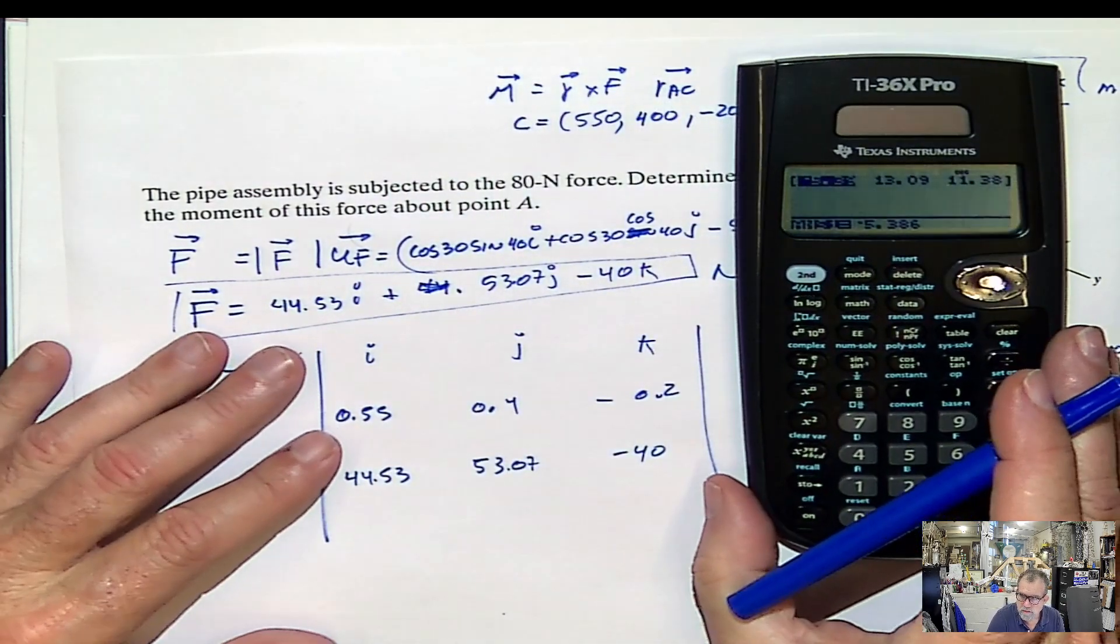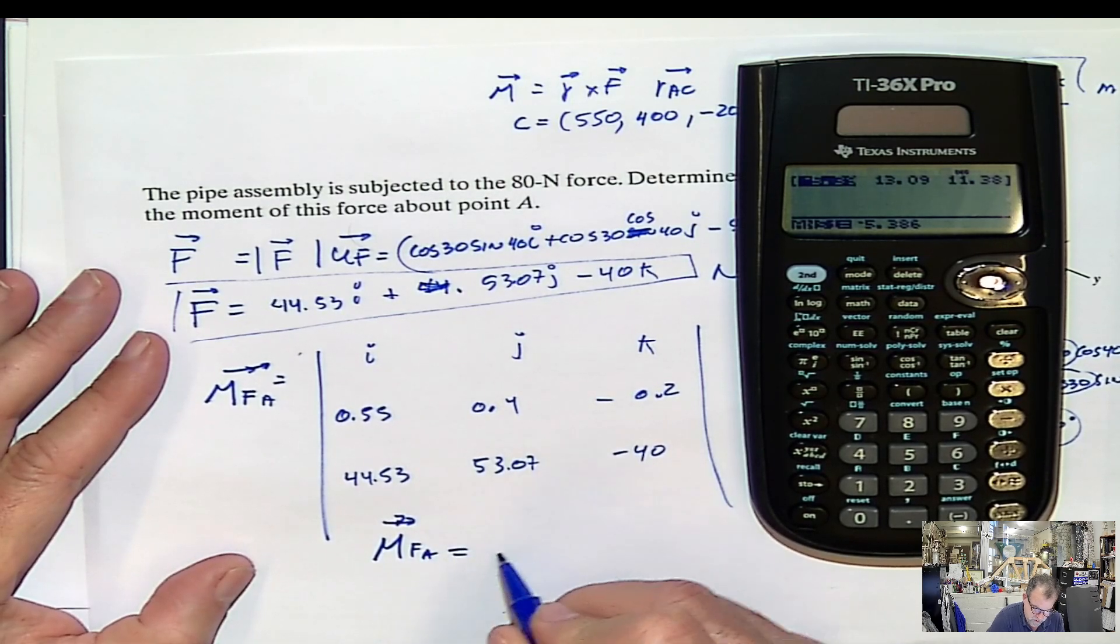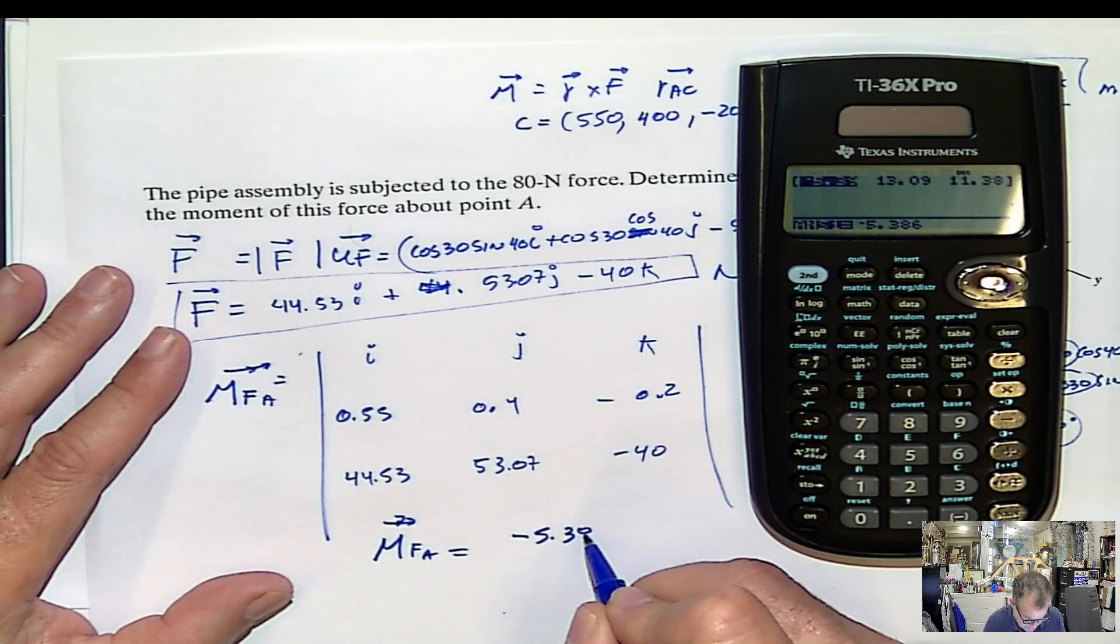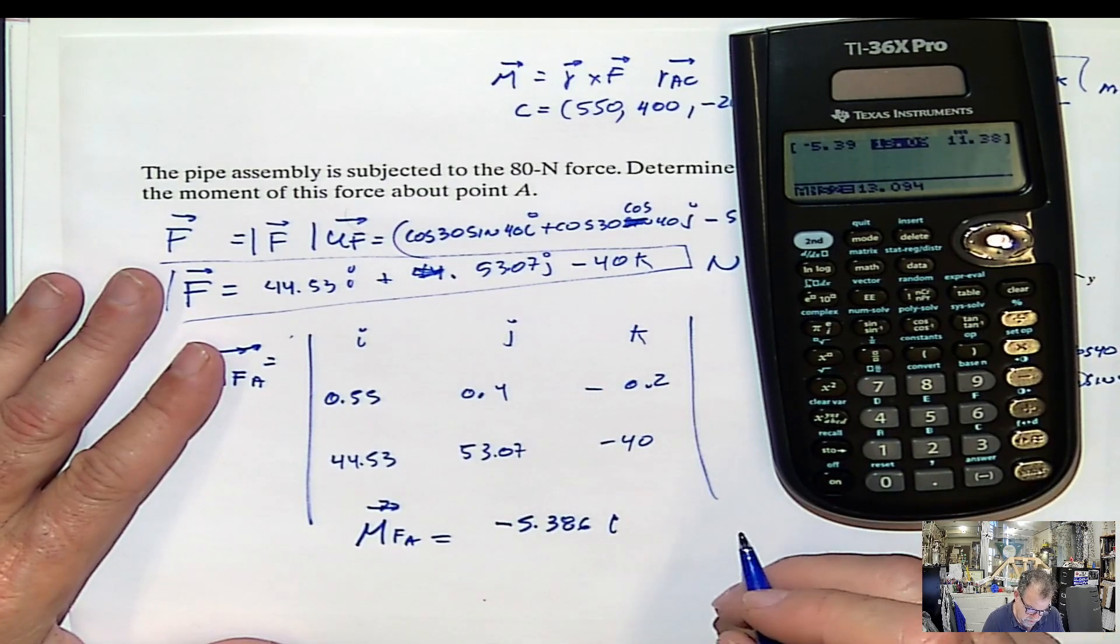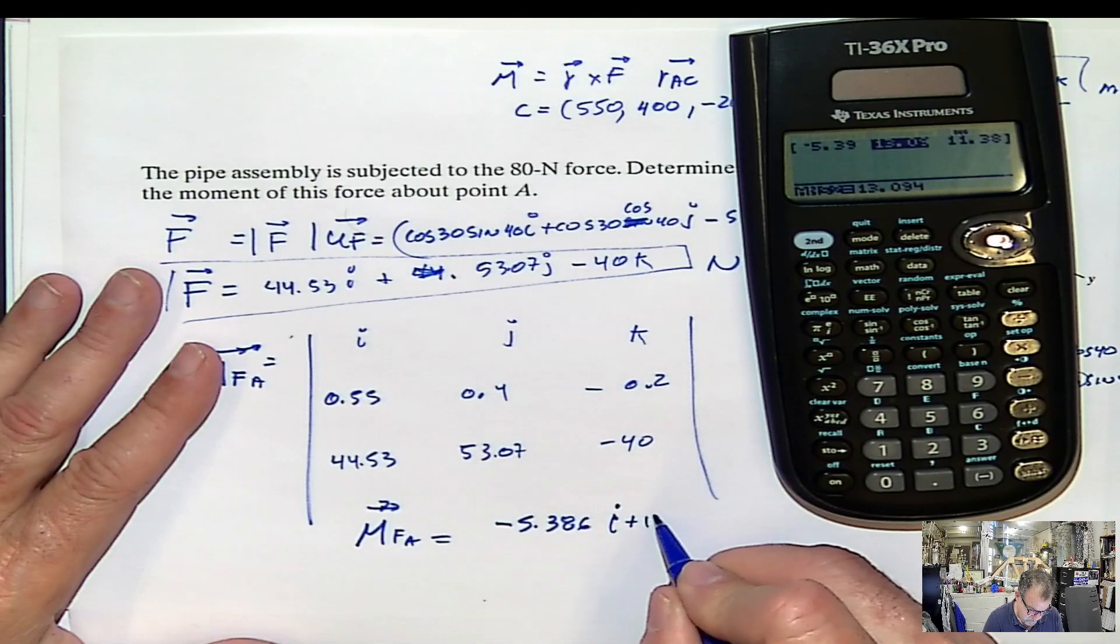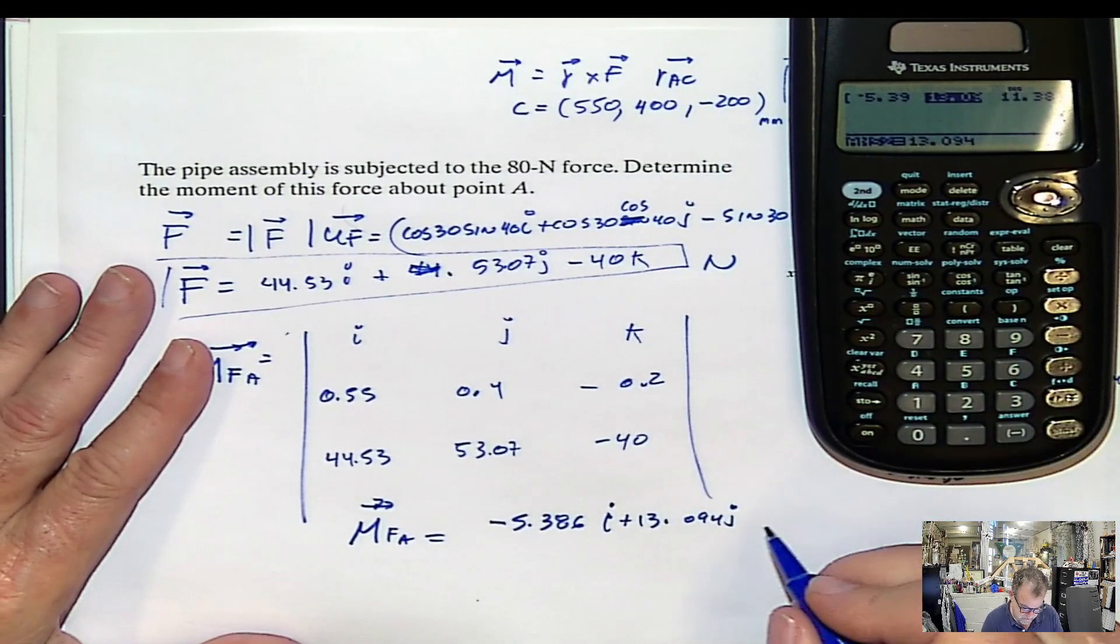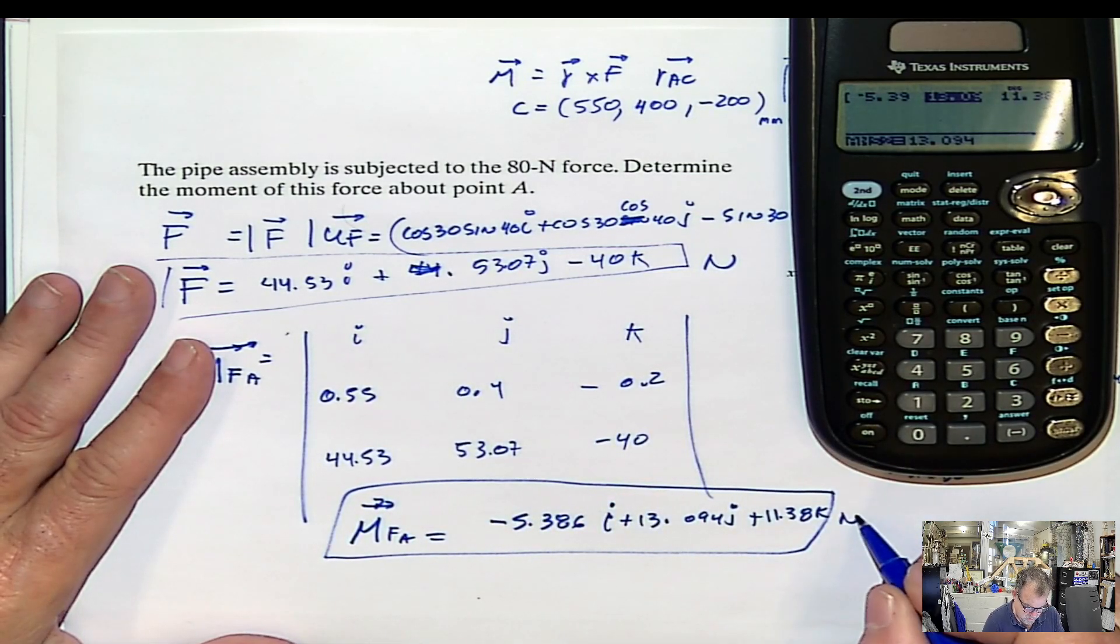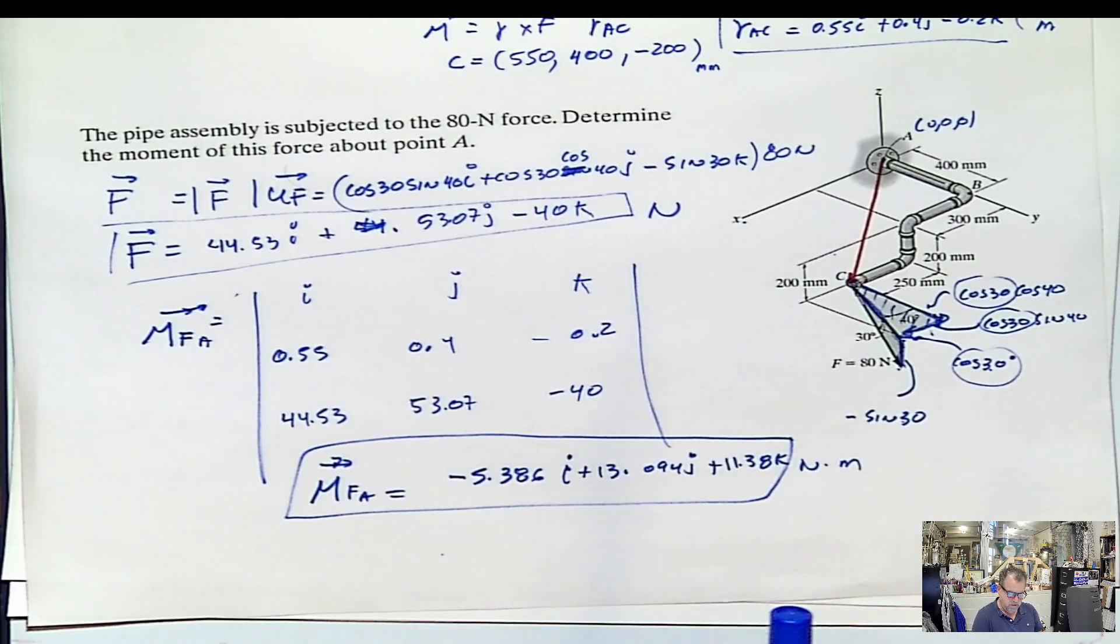And the value will be, when I'm reading from here, that moment would be negative 5.386 i, 13.094 j, 11.38 k. What are the units? Newton meter. So if you need the magnitude of the moment, square root of this square plus this square plus this square. If you need direction of that, then you calculate alpha, beta, and gamma.